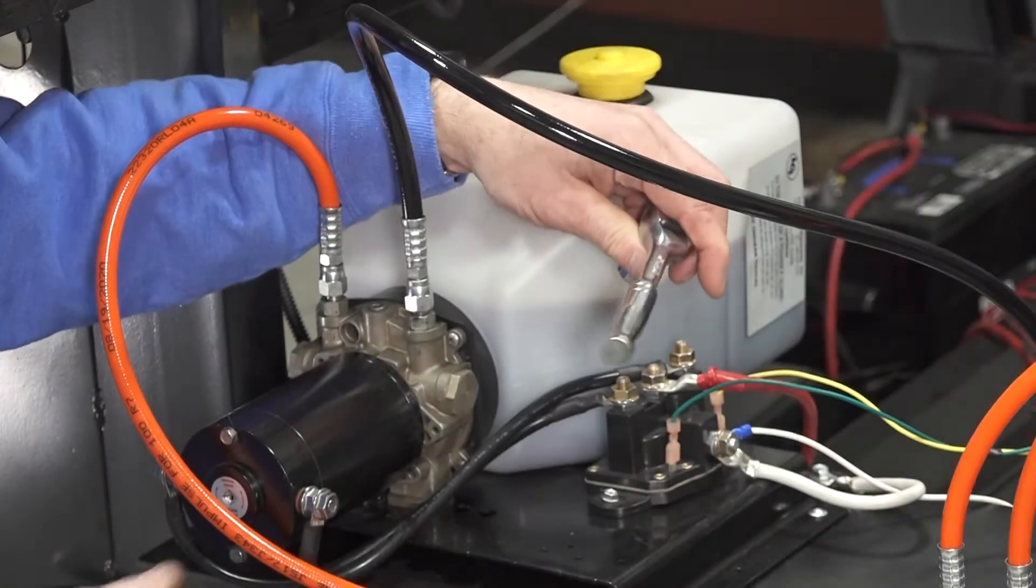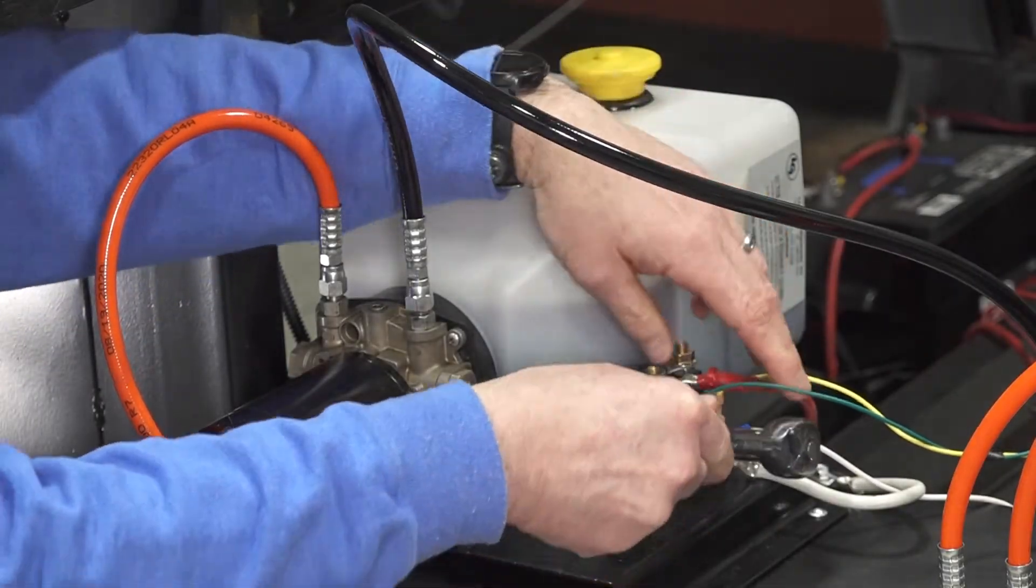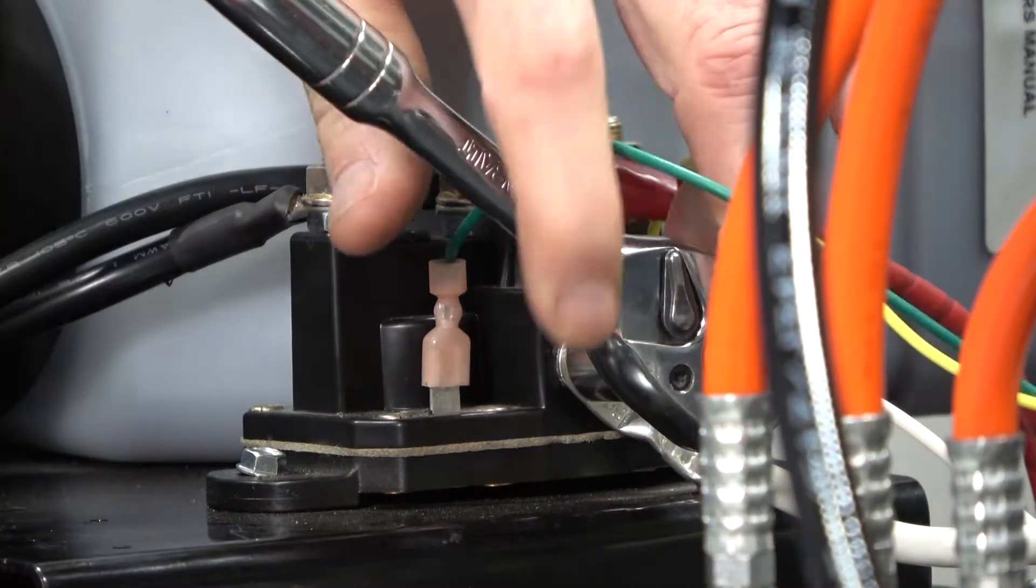First, we need to disconnect power from the battery. Now we can remove the ground wires from the ground post.